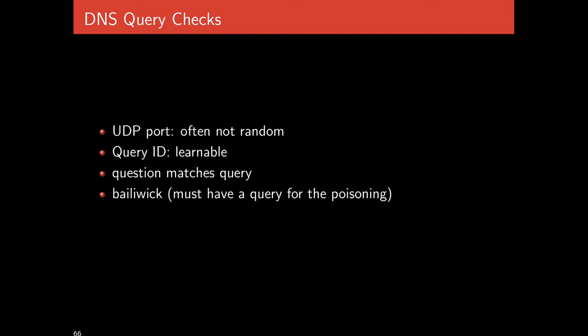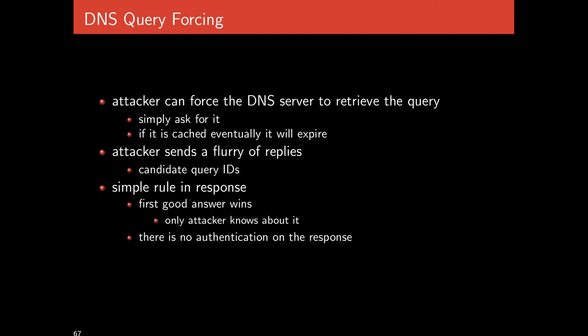In this sense, you're just tricking the resolver into revealing what its current query ID is. So the query ID is learnable — for a large number of implementations it happened to be sequentially increasing, and regardless it's not cryptographically large. The UDP port is also often not random — frequently it was just port 53 or some fixed port provided by the operating system. The question matching and bailiwick checking impose some constraints on how powerful a DNS poisoning attack is — you have to have someone actually making a query, and you can't throw in extra information — but still it is possible to force a DNS server to do a query.